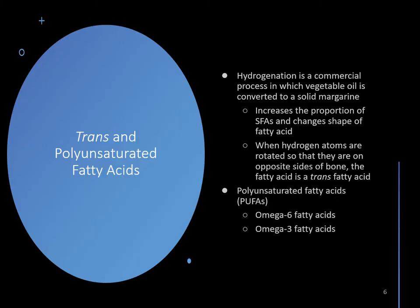During the hydrogenation process, vegetable oil is processed in a way that changes the shape of the molecule so that atoms sit on opposite sides — this creates a trans fatty acid. If the atoms are on the same side, it's a cis fatty acid. Polyunsaturated fatty acids, or PUFAs, include omega-6 and omega-3 fatty acids. Omega-3 gets a lot of attention, while omega-6 is like its older, less popular sibling. Partial hydrogenation results in a large number of fatty acids with an altered shape.